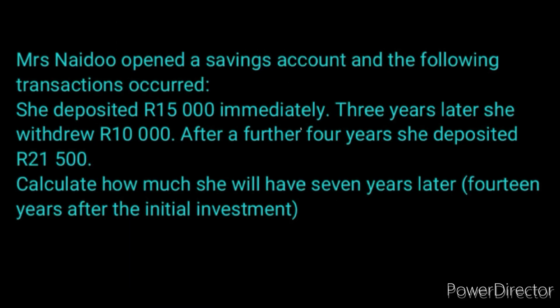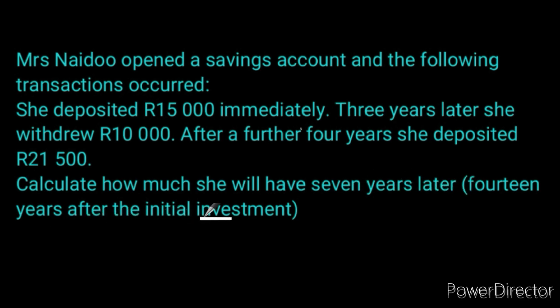Here is another scenario. Ms. Naidoo opens a savings account and the following transactions occurred: she deposited 15,000 immediately; three years later she withdrew 10,000 rands; after a further four years she deposited 21,500. Calculate how much she will have seven years later, which is 14 years after the initial investment. So is this grade 11 or grade 12 financial mathematics? Notice she made three transactions — a deposit, a withdrawal, and another deposit.